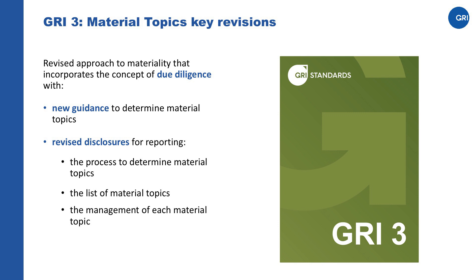GRI 3, Material Topics, now consolidates all the content related to materiality into one standard. We have made an adjustment to the approach to materiality — the focus has been slightly revised regarding the impact dimension. Previously, there were two criteria in determining the material topics in GRI: the significance of the impact and the influence on stakeholders. The focus is now on the significance of the impact.